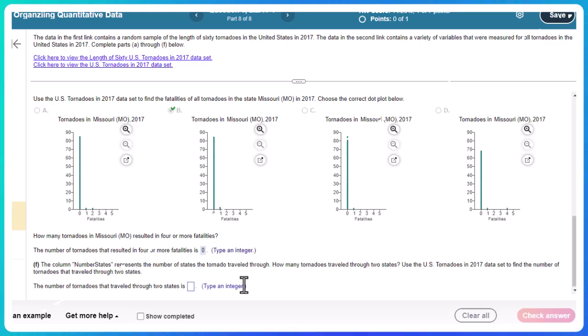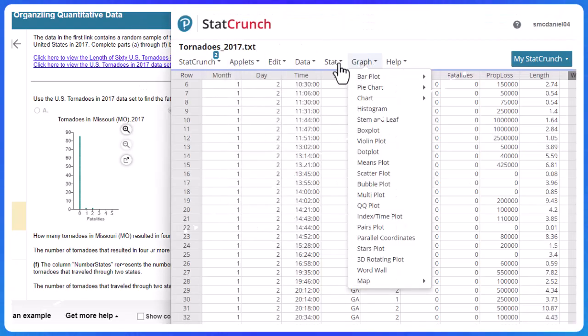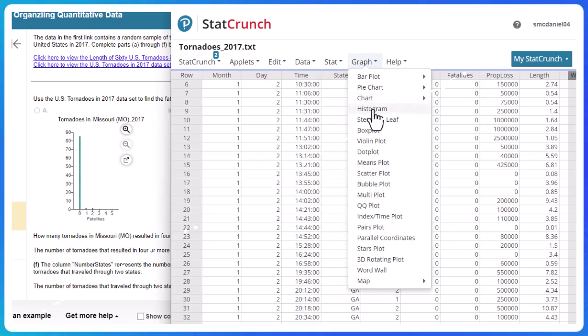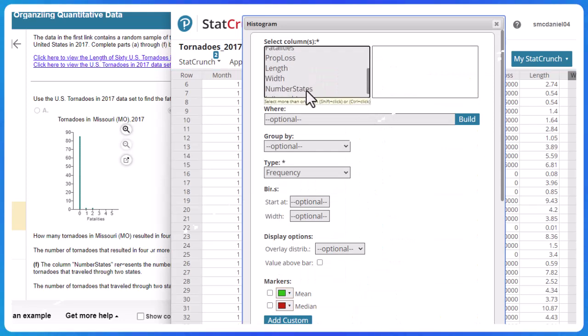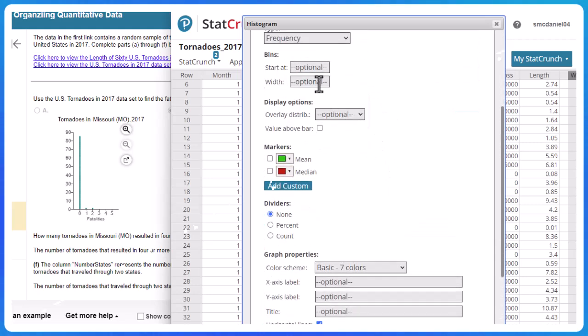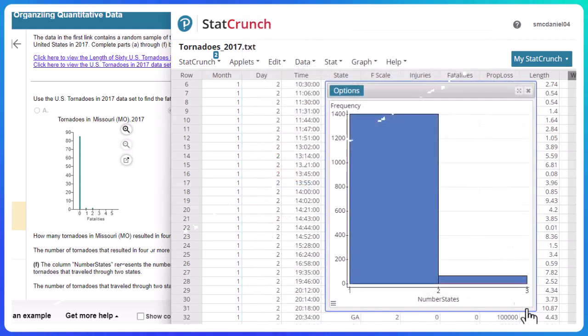The column number state represents the number of states the tornado traveled through. How many tornadoes traveled through two states? The US tornadoes in 2017 data set to find the number of tornadoes that traveled through two states. Okay, so I can go to graph. I could do a histogram or I could do just frequency, since that's what I know I'm going to do. Either one's fine. Let's go and do a histogram. And we're doing number of states. And let's just do a bin width of one, because we're going to need to know exactly how many through two states. So that's one to two. This is actually only two right here. And there are 66 that went through two states.